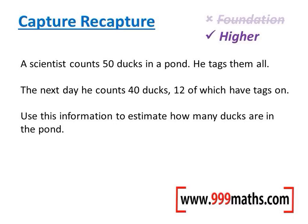I'm going to start by writing these as fractions. On the first day the scientist counts 50 ducks, and we don't know how many there are altogether, so it's 50 out of an unknown number. The next day he counts 40 ducks, 12 of which have tags on, so on the second day 12 out of 40 have tags on. We can say that these fractions are equal, because in theory the same proportion would have tags on the second day as the scientist would have collected on the first day out of the whole population.